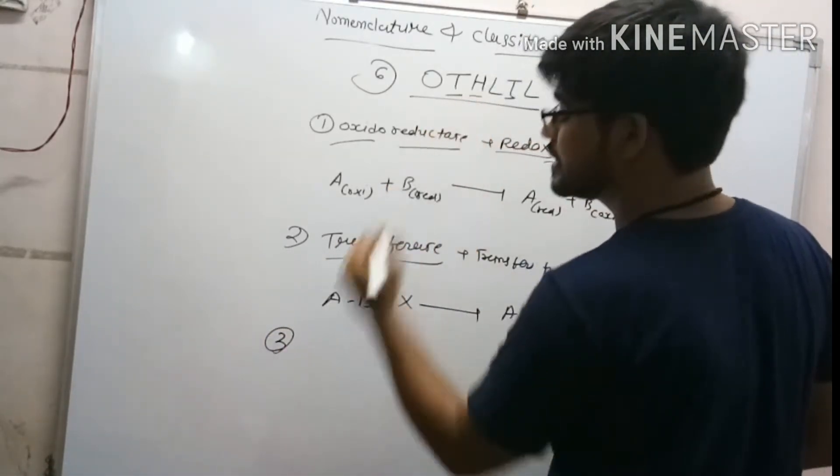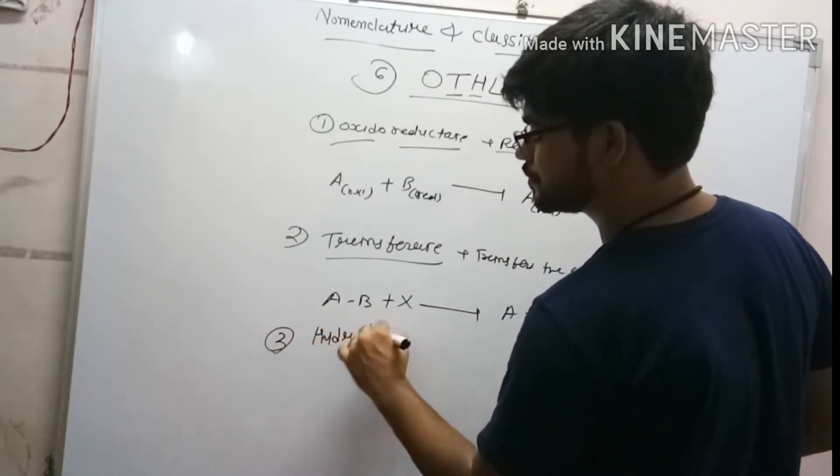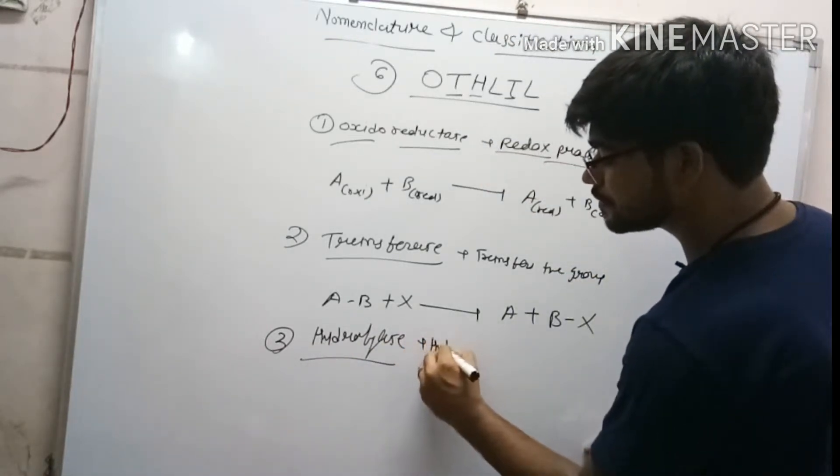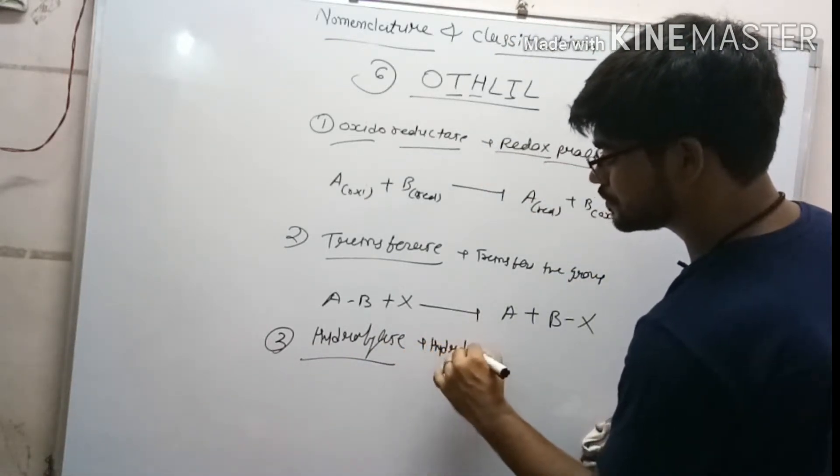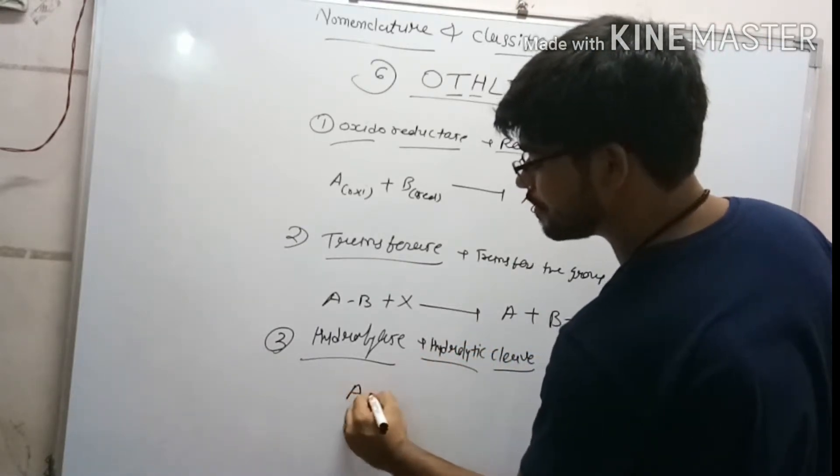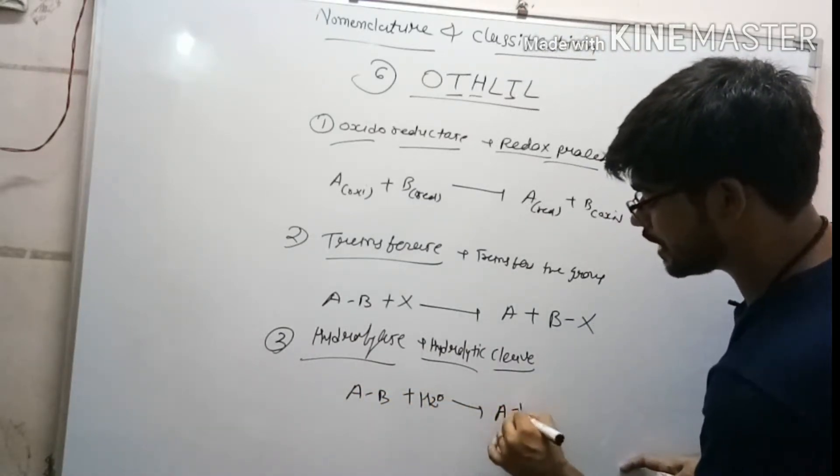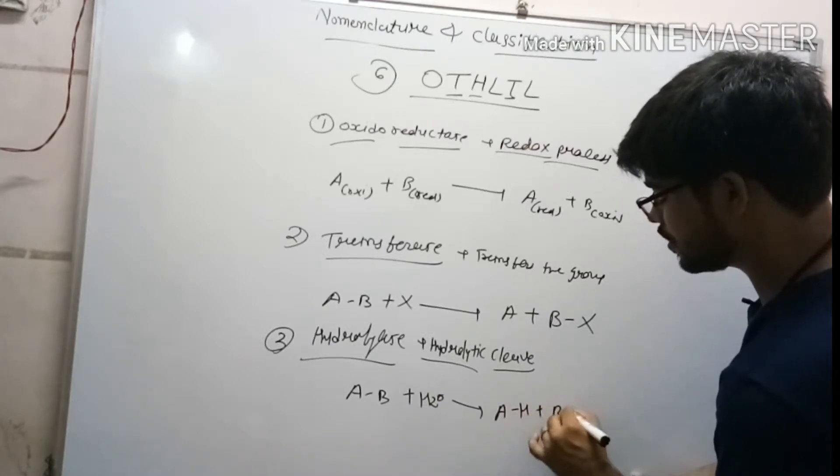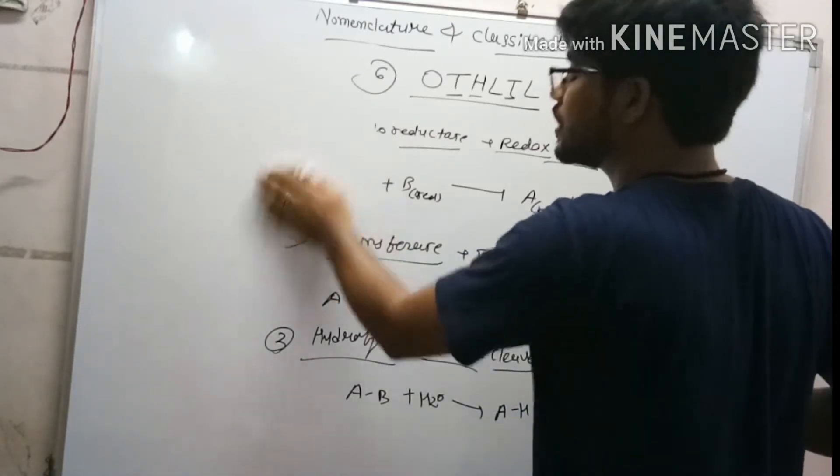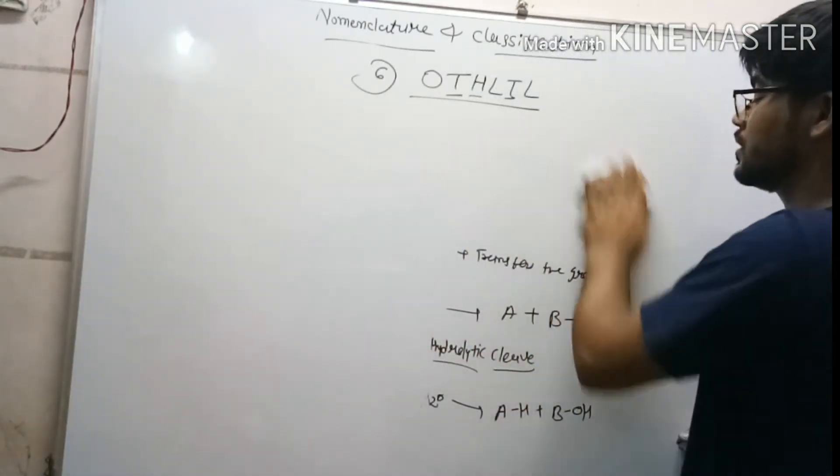The third one is hydrolase. What will it do? It does hydrolytic cleavage. For example, here is AB plus H2O. It cleaves AB into AH plus BOH. It does hydrolytic cleavage. In all three classes, there is no use of any ATP. That is must remember.